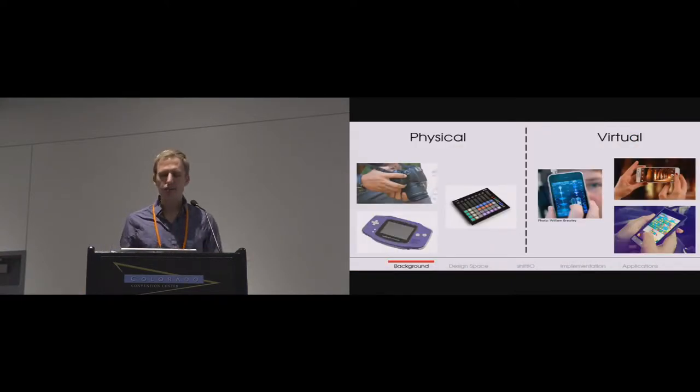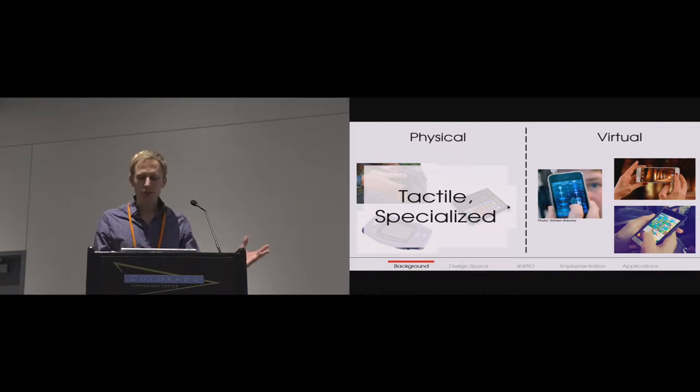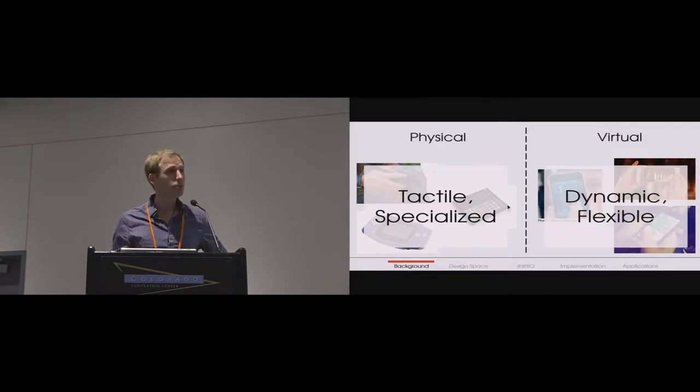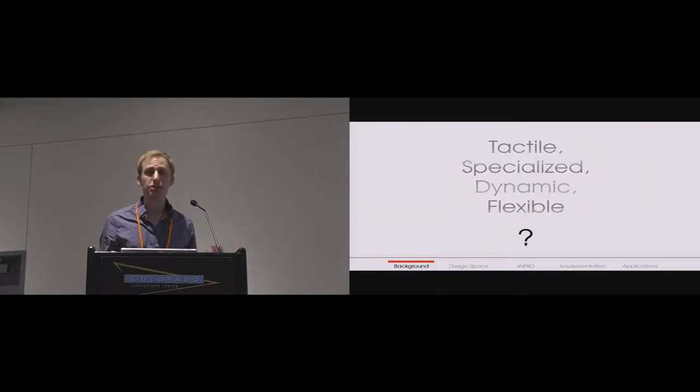I'd like to start by talking about how we interact with our devices. Physical controls have rich haptic feedback which makes them easy to localize and manipulate, and they can be highly specialized for a given task. On the other hand, virtual controls such as those on a touchscreen are dynamic and can adapt to fit a variety of different contexts. So our question, of course, is can we have the best of both worlds? That is, can our devices have familiar physical controls which can reconfigure as virtual controls do?